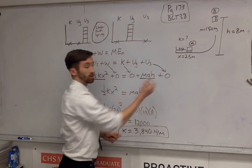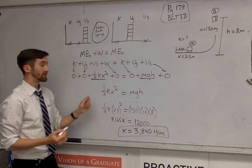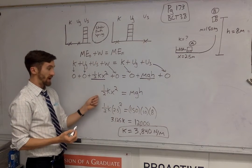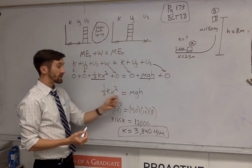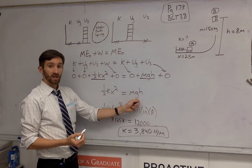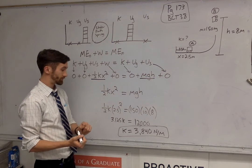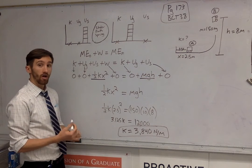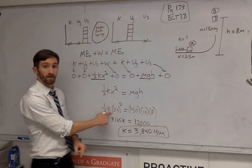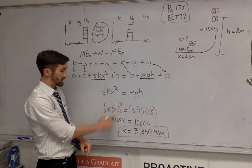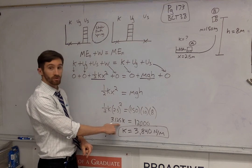So if we simplify that, we have one-half kx squared, or the spring potential, equals mgh, the gravitational potential at the end. From here, all I need to do is plug in my givens.